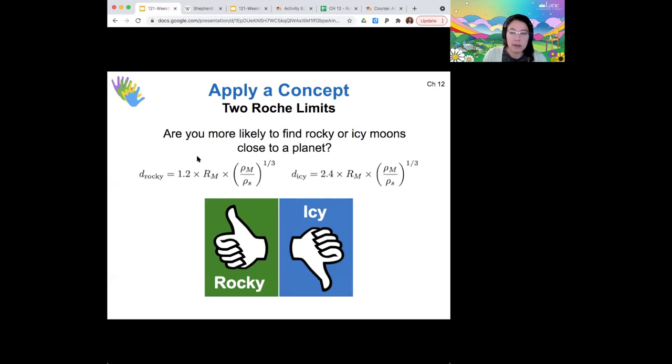Based on these two different formulae, which are the same, just with a different coefficient, are you more likely, you think, to find rocky or icy moons close to a planet? So would this be a, you know, would the overall distance be different in what way?